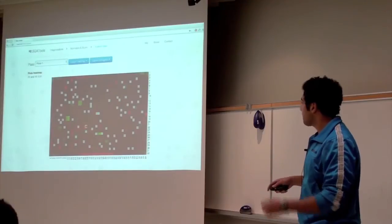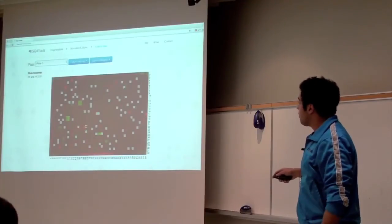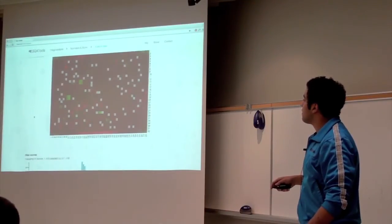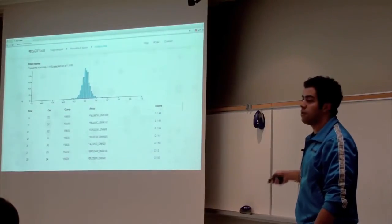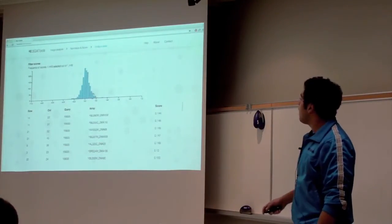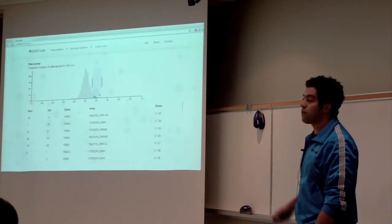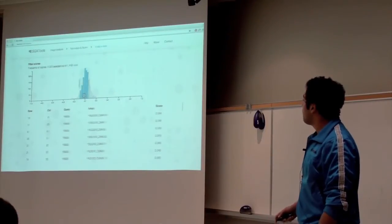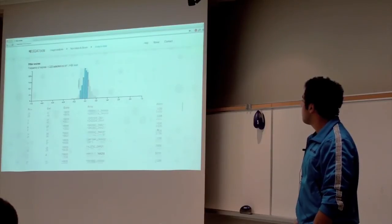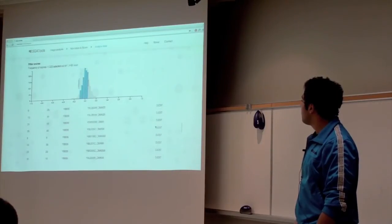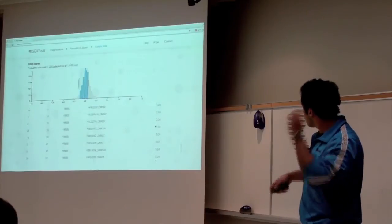You can also scroll all the way down and you'll have a histogram of the scores that you got back. Typically, it's a normally distributed histogram. You can drag along specific windows of the histogram, have a look at the extremes of the histogram, which is typically returned in the table.